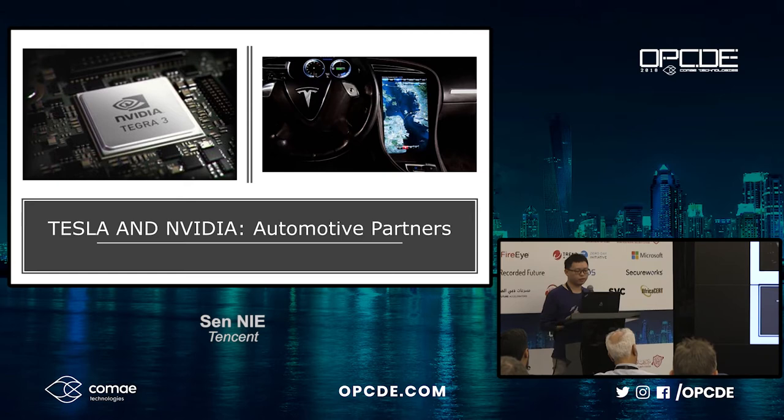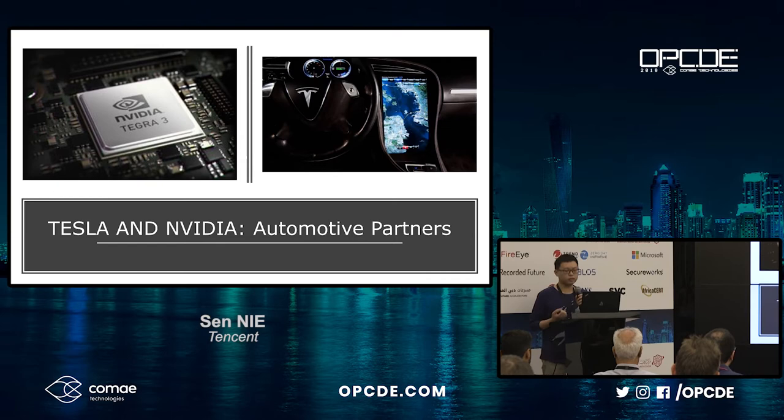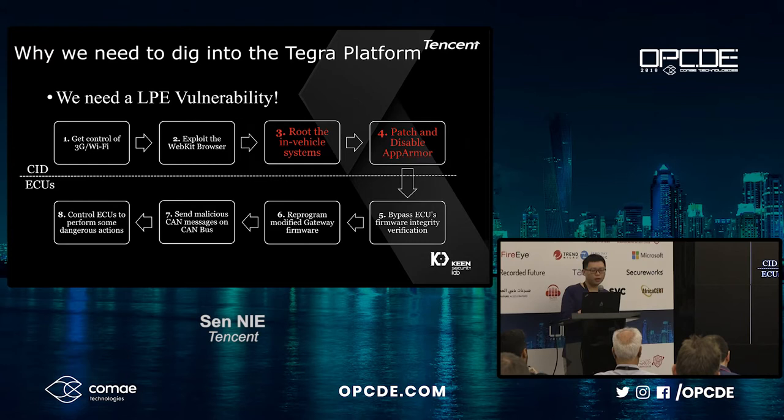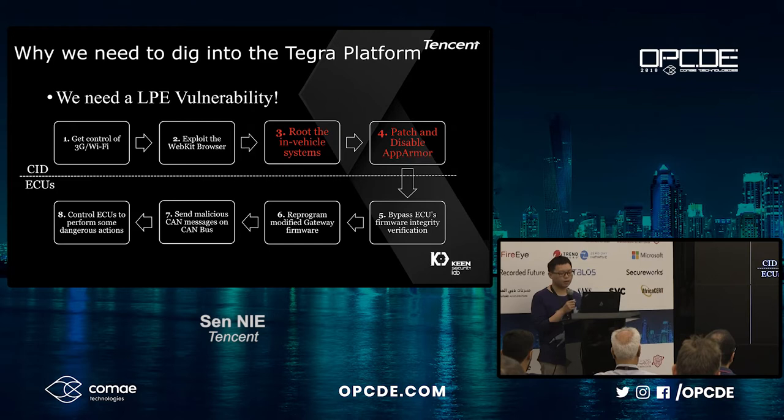Tesla and NVIDIA are good friends — automotive partners. Based on Tegra processors, the Tesla car has its infotainment system. So why do we need to dig into the Tegra platform? We dug into it because of our Tesla hacking research. During that research, we needed a way to gain root on the Tesla infotainment system — that's an important part of our whole attack chain.